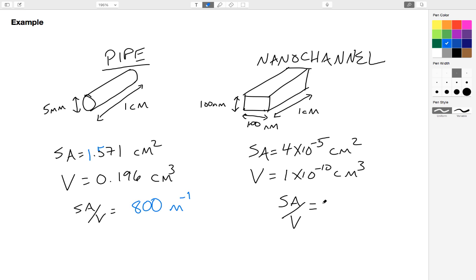If I calculate the surface area to volume ratio of this, I get 4×10⁷ per meter. So in other words, the surface area to volume ratio of my nanochannel is 50,000 times as large as the surface area to volume ratio of my pipe. So I have 50,000 times as much surface area per unit volume of fluid that flows through my device.